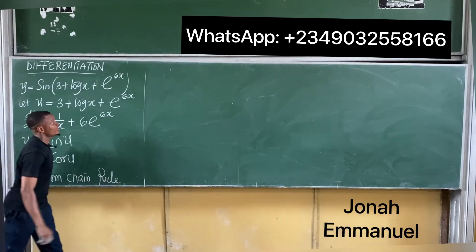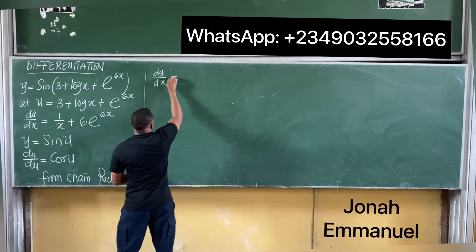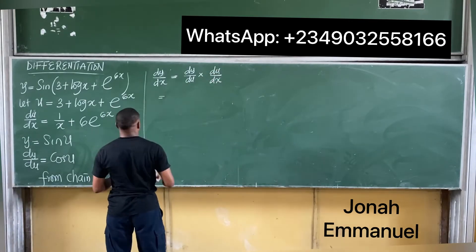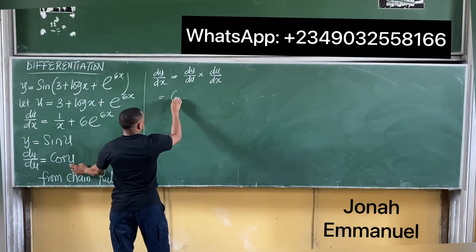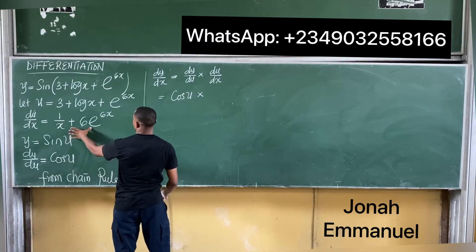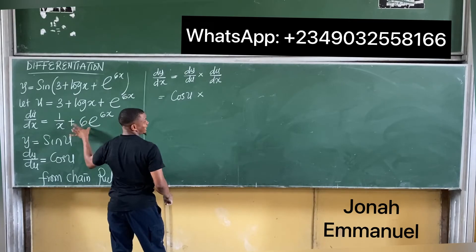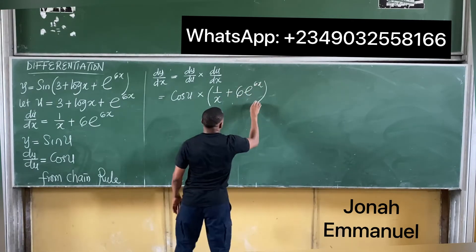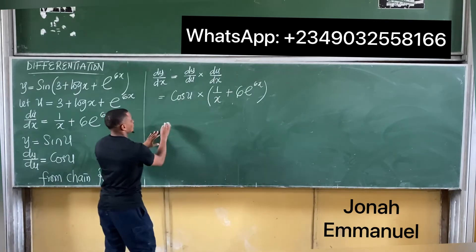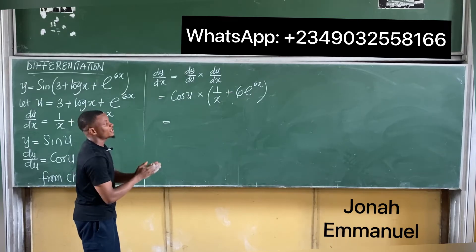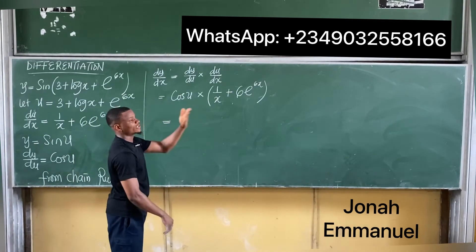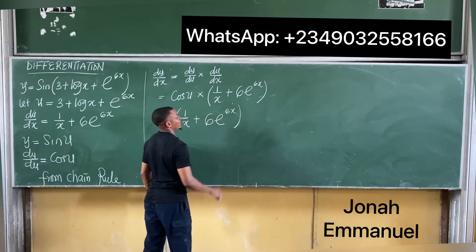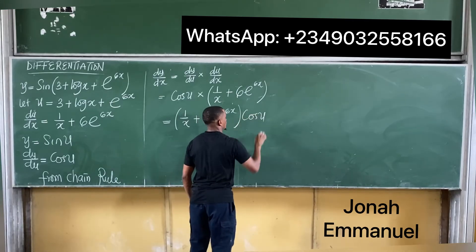From the chain rule, dy/dx = (dy/du) × (du/dx). That equals cos(u) times (du/dx). Since this is a complex term it must be in brackets: (1/x + 6e^(6x)). For better arrangement, this term comes first: (1/x + 6e^(6x)) × cos(u).